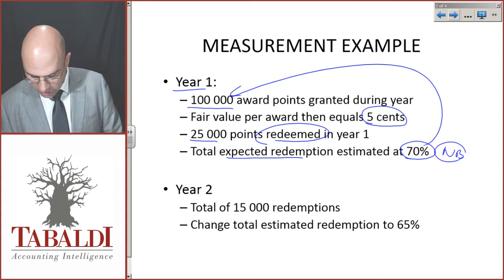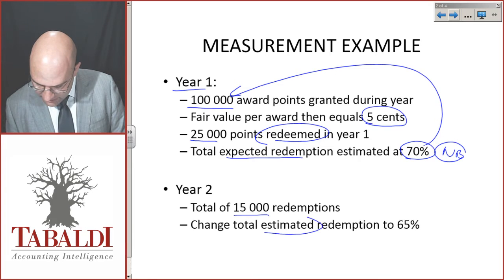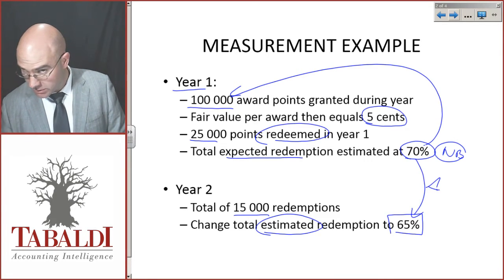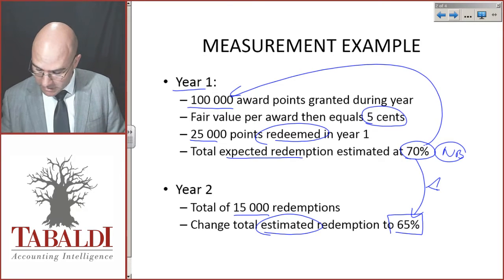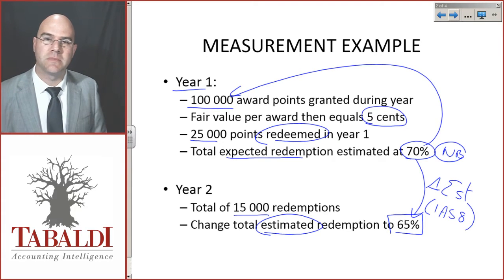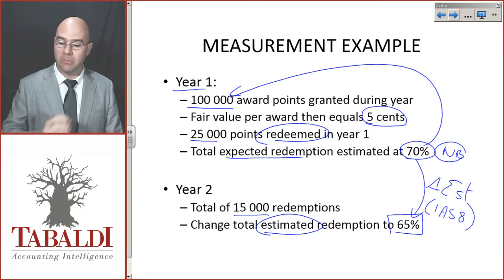In year 2, we had a total of 15,000 redemptions and we changed the total estimated redemption to 65%. When I do a delta sign, a triangle like that, that means change in estimate. Remember IAS 8, changes in estimates are accounted for prospectively. This year going forward, we don't go backwards.